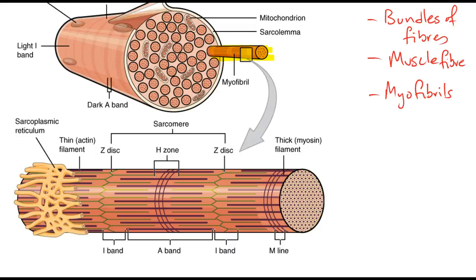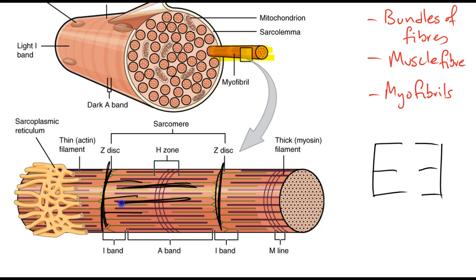So within our sarcomere we have our Z lines that define the beginning and end of each individual sarcomere. We have our actin filaments which are the thin filaments that come off the sides of the Z lines. We have our myosin which are the thick protein filaments in the center of each sarcomere. And from those we have myosin cross bridges.